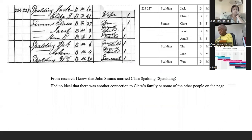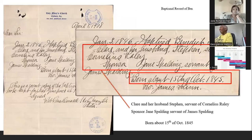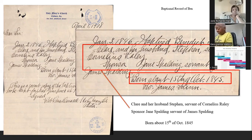I did know from my research that John Sims married Clara Spaulding, so I thought that was the only connection I had to Jack and Eliza — through their daughter through John Sims. But I was wrong. I continued on to research Ben. I knew he served during the Civil War in the 125th U.S. Colored Infantry, Company C, so I ordered his pension file. As I was reading his pension file, my research questions were answered.